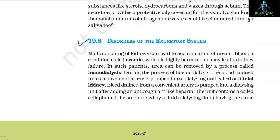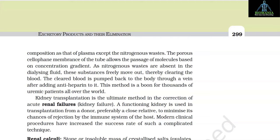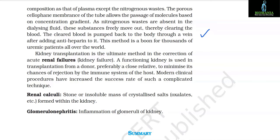Section 19.8: Disorders of the Excretory System. Malfunctioning of the kidney can lead to accumulation of urea in blood, a condition called uremia, which is highly harmful and may lead to kidney failure. In such patients, urea can be removed by a process called hemodialysis. During hemodialysis, blood drained from a convenient artery is pumped into a dialyzing unit called an artificial kidney, after adding an anticoagulant like heparin. The unit contains coiled cellophane tubes surrounded by a dialyzing fluid having the same composition as plasma except for nitrogenous waste. The porous cellophane membrane allows passage of molecules based on concentration gradient; since nitrogenous waste are absent in the dialyzing fluid, these substances freely move out, clearing the blood. The cleared blood is pumped back into the body through a vein after adding anti-heparin. This method is a boon for thousands of uremic patients worldwide.